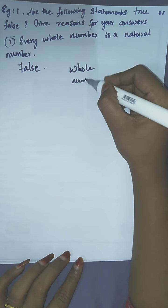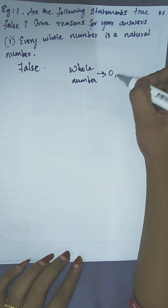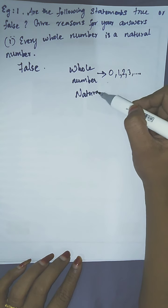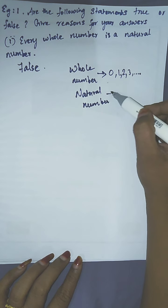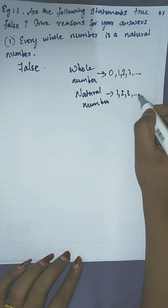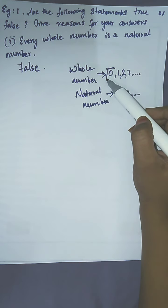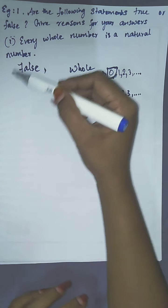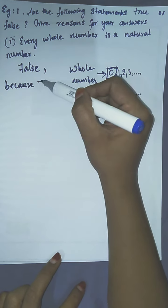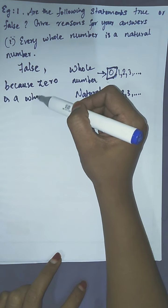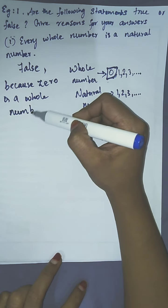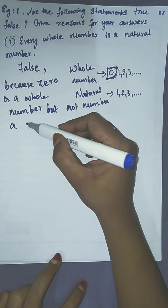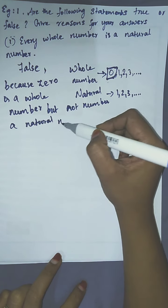The whole numbers are 0, 1, 2, 3 and so on. And the natural numbers start from 1 — so 1, 2, 3, and so on up to infinity. So here there is an extra number, 0. So it is false because 0 is a whole number but not a natural number.